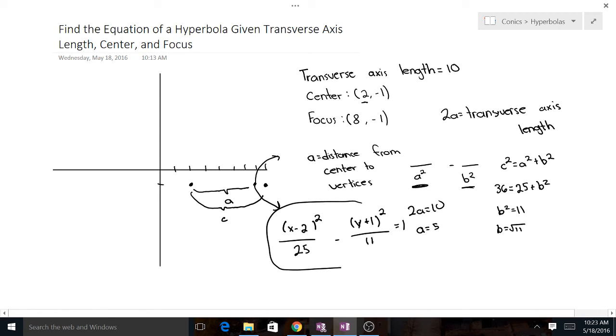That's our final equation. We've got x minus 2 squared over 25, minus y plus 1 squared over 11, equals 1. Hope this video is able to help, and let me know if you have any questions. Thanks for watching.